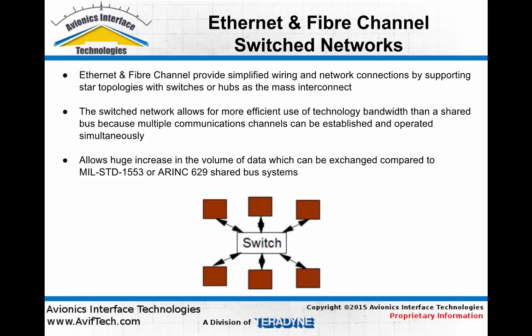Because network technologies such as ethernet and fiber channel are based on a switch at the core of the network, they provide for simplified wiring and network connections within an aircraft system. End nodes are simply wired to the mass interconnect or the switch and are then able to communicate with any other node wired to that switch in the network.